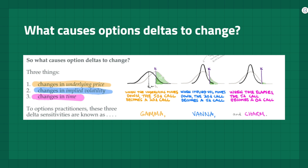What causes options deltas to change? Three things: changes in the underlying price, changes in implied volatility, and changes in time — known as gamma, vanna, and charm respectively. When the underlying price moves down, the 50 delta call will become a 20 delta call. When implied volatility moves down, the 20 delta call becomes a 5 delta call. When time elapses, the 5 delta call becomes a 0 delta call. Charm doesn't really have much of an impact, so we are going to dive into vanna and the market impact associated with it.